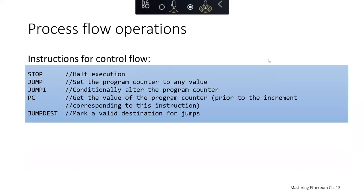In addition to stack operations, we have process flow operations for control flow. These are the very basic ones. An instruction to halt execution, an instruction to jump to another value, another jump to conditionally alter the program counter, get the value of the program counter, and mark a destination for jumps.